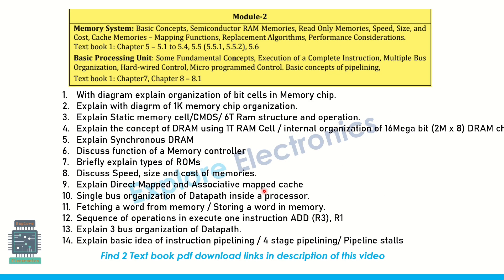Coming to module two, which is about memories and basic processing units. There are different memories discussed starting with 1-bit cell, 6T cell RAM, ROM, and everything. The organization of bit cells in a memory chip can be asked — there is a diagram for 1K memory chip organization and static memory chip organization, that is the 6T RAM structure.